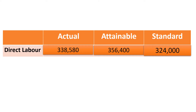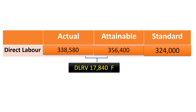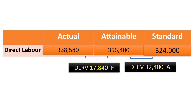The direct labor rate variance compares actual rate and standard rate, giving a favorable variance of 70,840 because we actually paid less. The difference between labor hours gives the efficiency variance — if more efficient, fewer hours are used; if inefficient, more hours are used. Since the standard is less than the attainable, they used more labor hours. Therefore, the direct labor efficiency variance is 32,400 adverse.